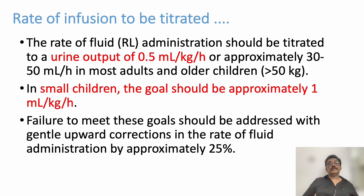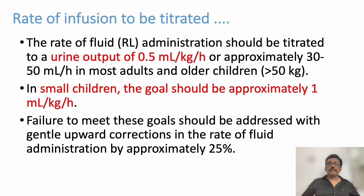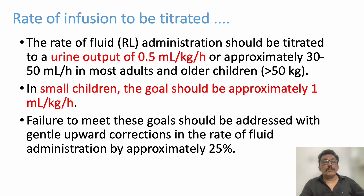The best way to monitor the burn patient is urine output. If there is no pre-existing renal failure, urine output alone is sufficient. A urine output of 0.5 ml/kg/hour indicates adequate volume resuscitation. If the patient is unconscious or intake-output tracking is difficult, place an indwelling urinary catheter to monitor output properly.